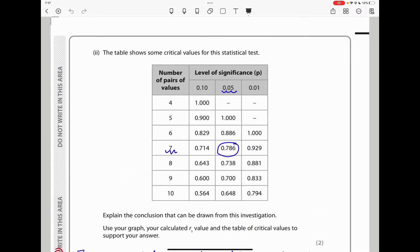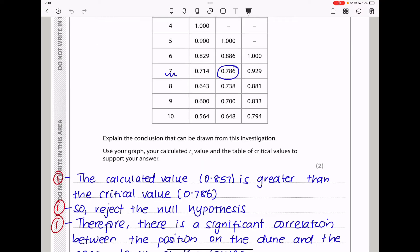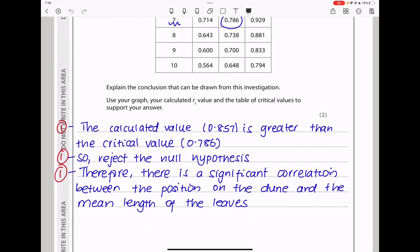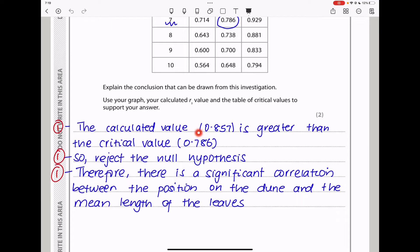Next they say the table shows some critical values for this statistical test. So we have the numbers of pairs of values. Of course, there were 7 pairs. And the level of significance, p, in biology, we use 0.05. So the corresponding value should be this. It matches with that as well as there. So this should be my critical value. Here they said, explain the conclusion that can be drawn from this investigation. And use your graph, your calculated rs value, and the table of critical values to support your answer. So here I said, the calculated value, 0.857, is greater than the critical value, 0.786. So reject the null hypothesis. And therefore, there is a significant correlation between the position on the dune and the mean length of the leaves.